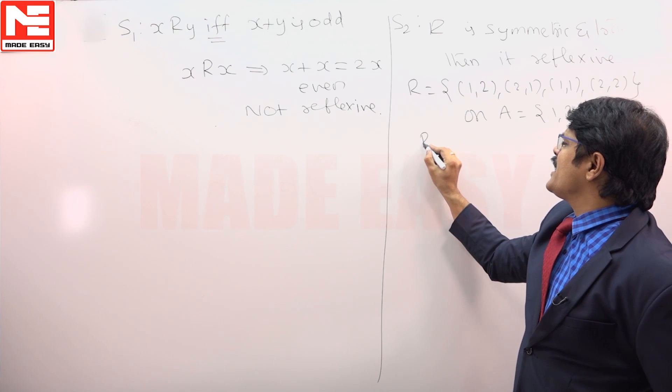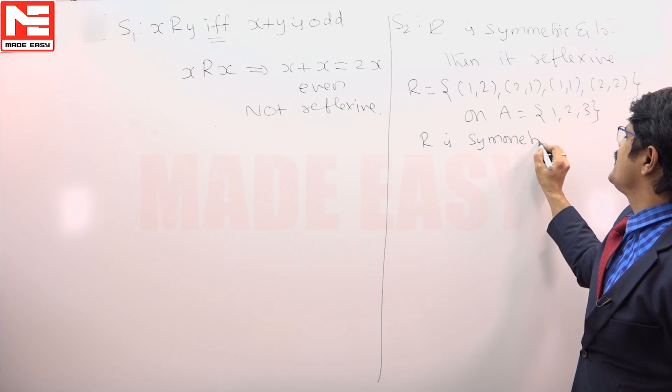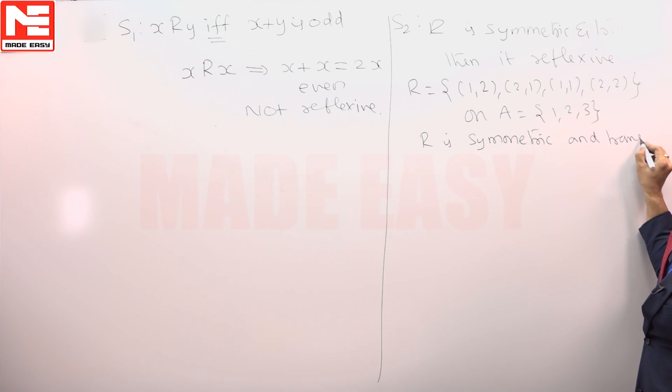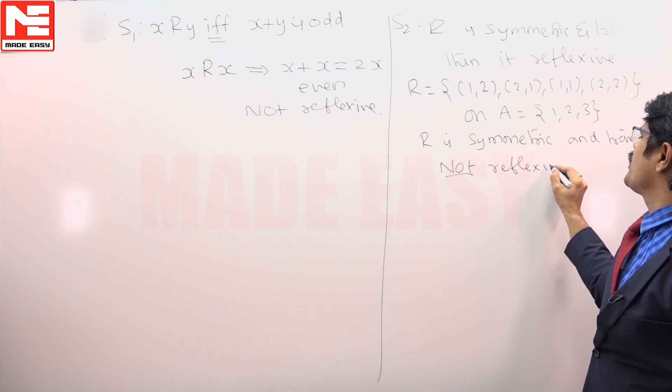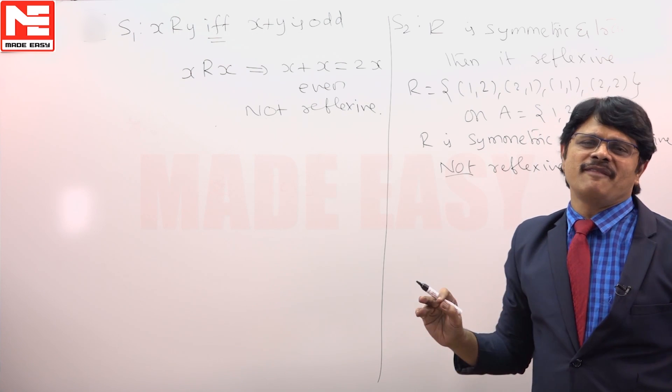If you observe this, R is symmetric and transitive but not reflexive. Therefore, if a relation is symmetric and transitive, it need not be reflexive.